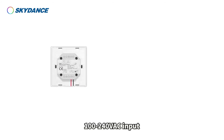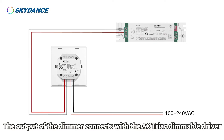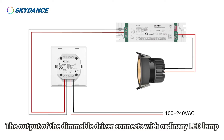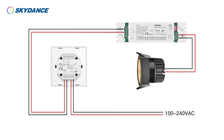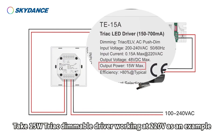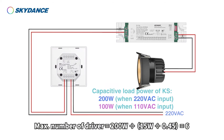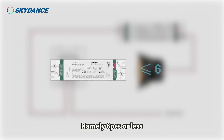Application 3: 100–240 volts AC input. The output of the dimmer connects with the AC triad dimmable driver. The output of the dimmable driver connects with an ordinary LED lamp. The max quantity of connected drivers should also be calculated with power factor 0.45. Taking a 15-watt triad dimmable driver at 220 volts as an example: max number of drivers equals 200 watts divided by 15 watts divided by 0.45, equals 6. Namely 6 pieces or less.